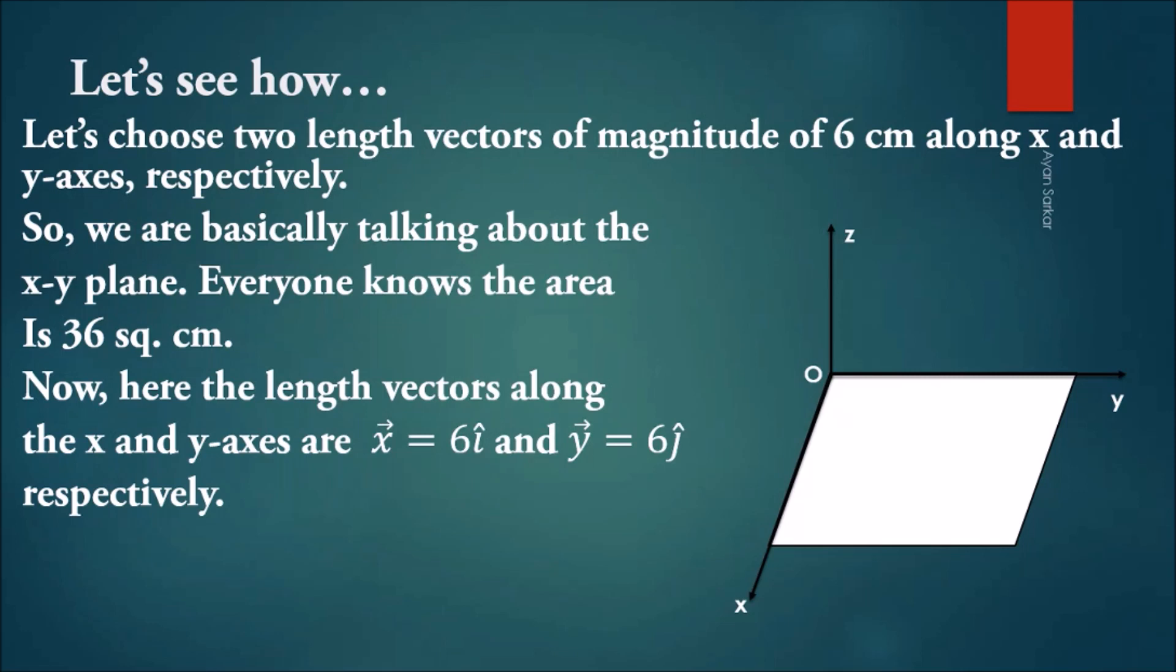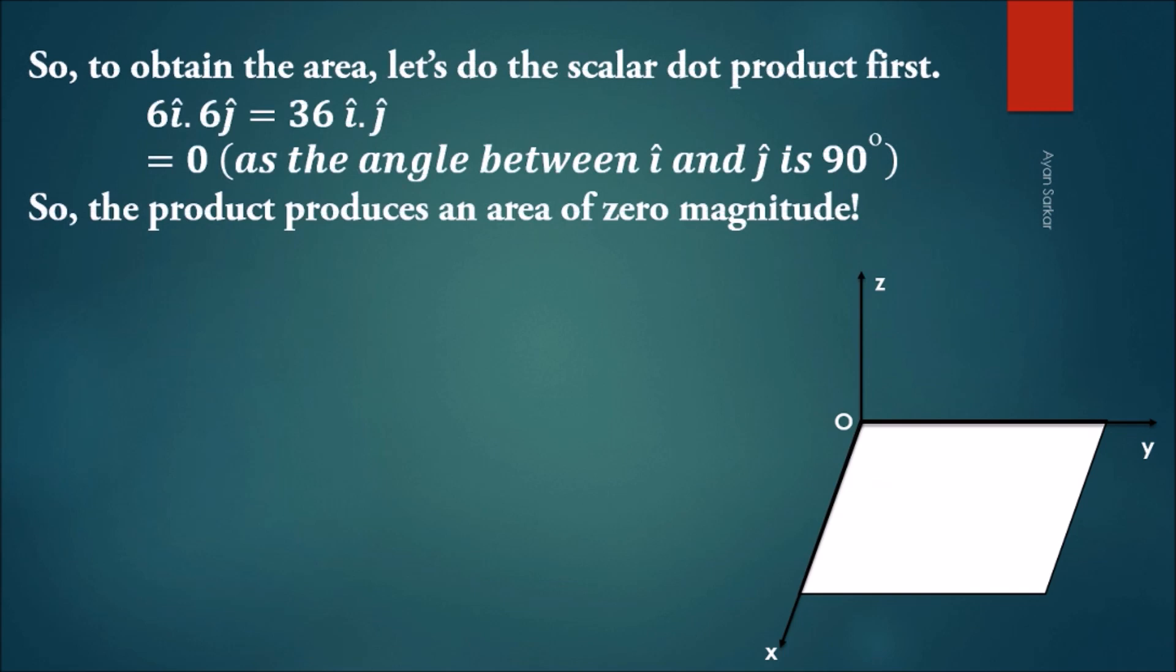So to find the area, let's first do the scalar dot product: 6î · 6ĵ. You know that î and ĵ are unit vectors along the x and y axes. This product, 36(î · ĵ), produces 0 since î · ĵ = 0. So the scalar product produces zero area, which is not correct.